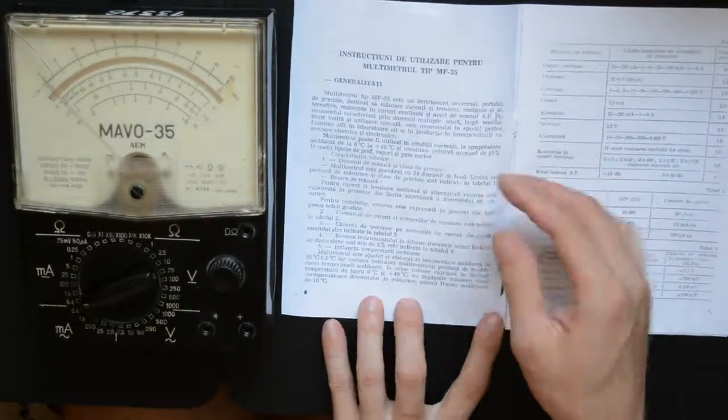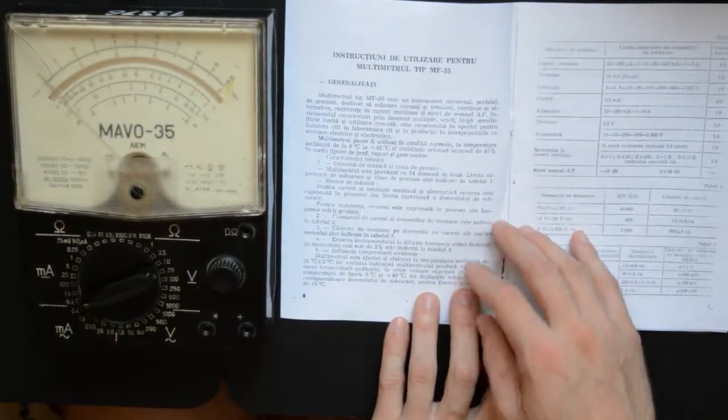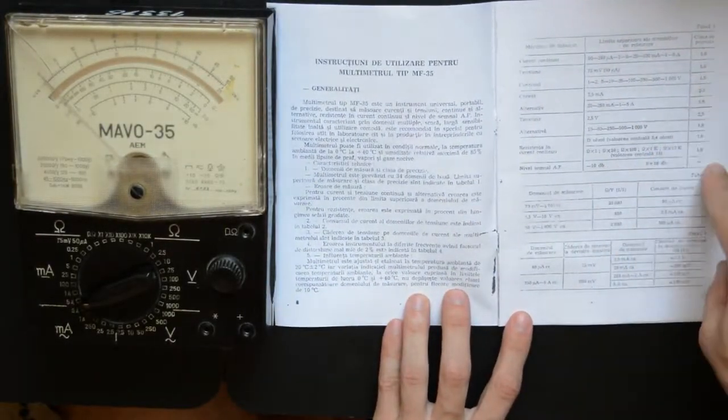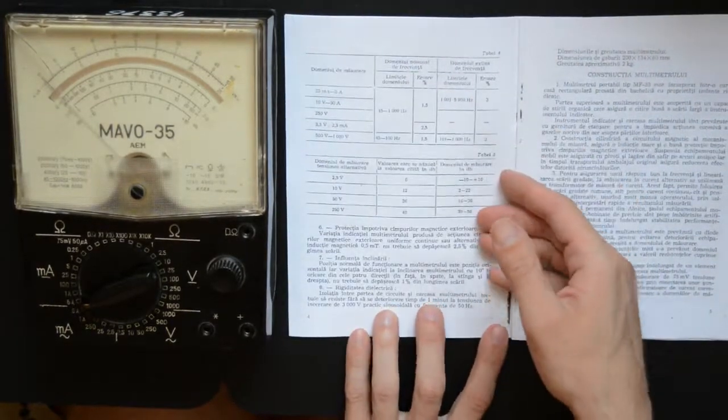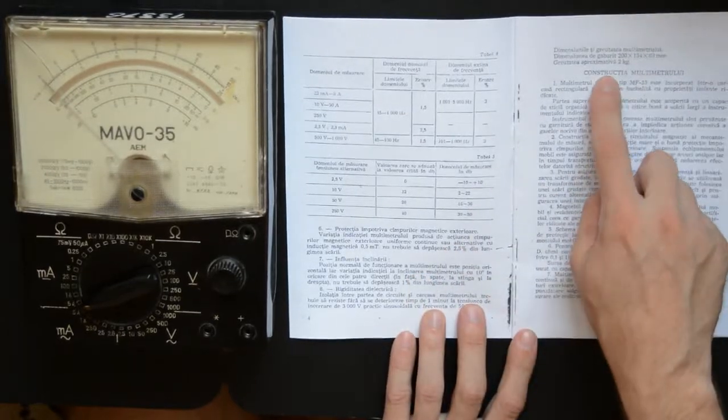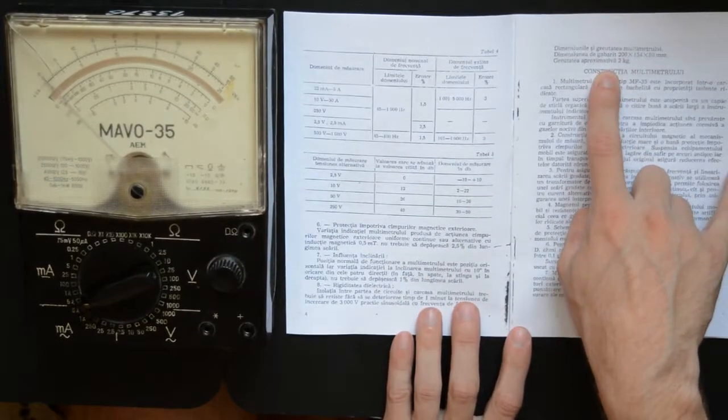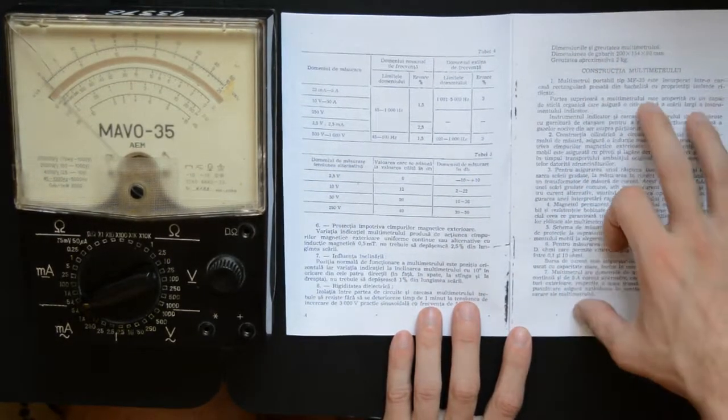So we got some general specifications, the various ranges, precision classes, more ranges and precision classes, again some more ranges, the approximate weight which is only about 2 kilograms, how the thing is built, how you should use it and exploit it apparently.